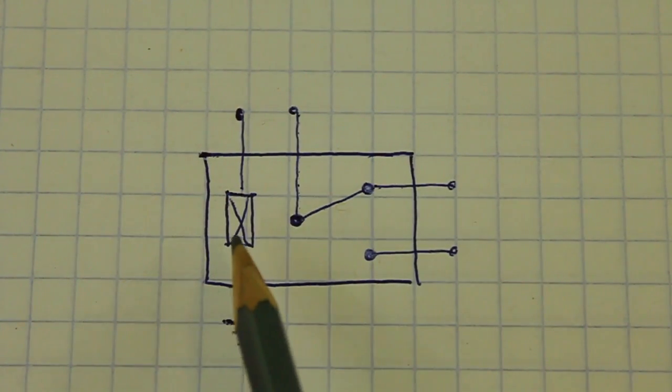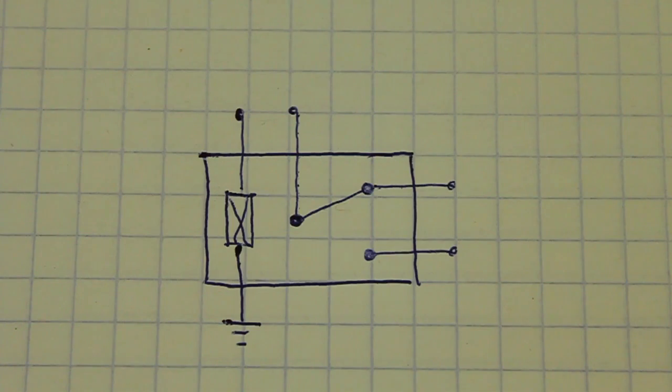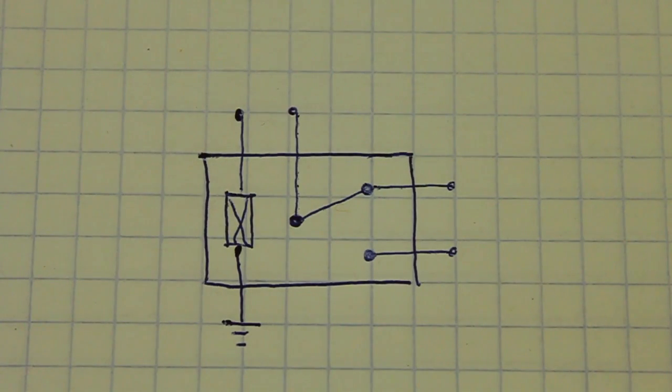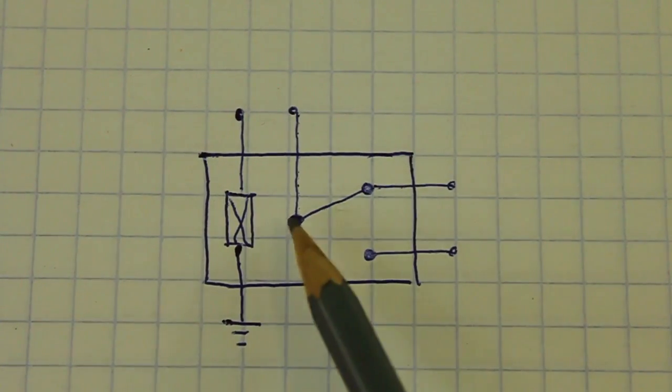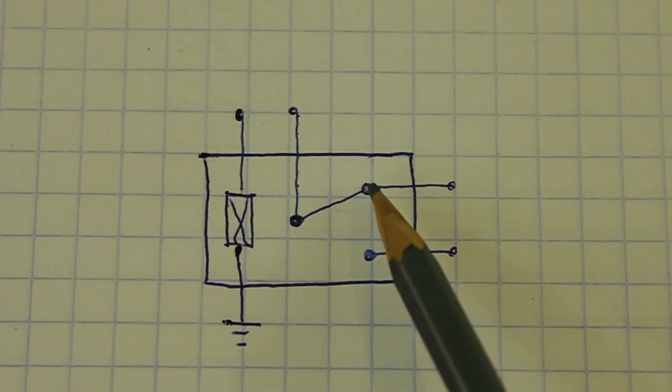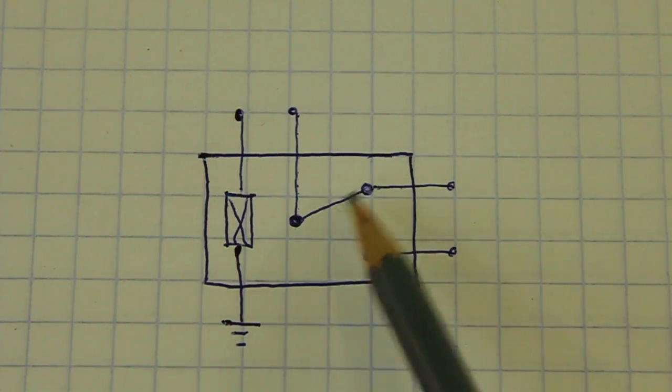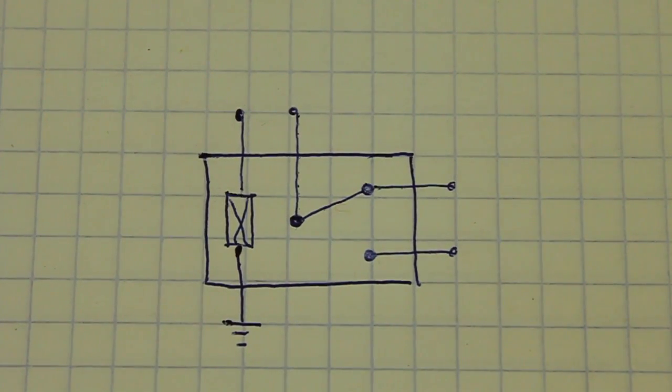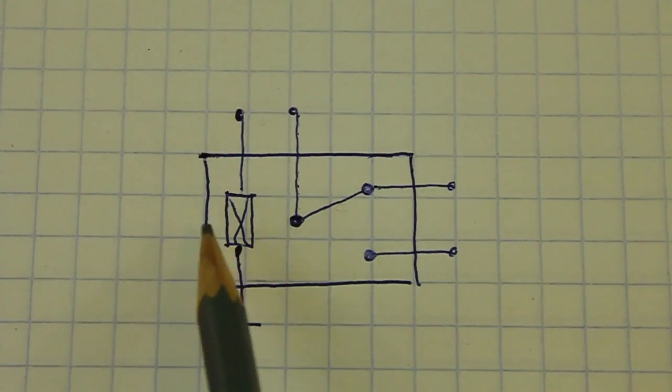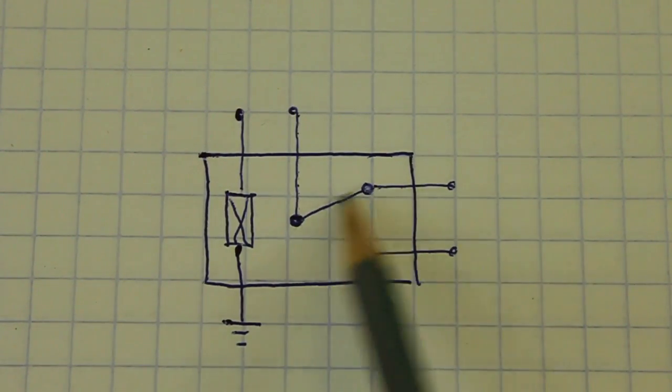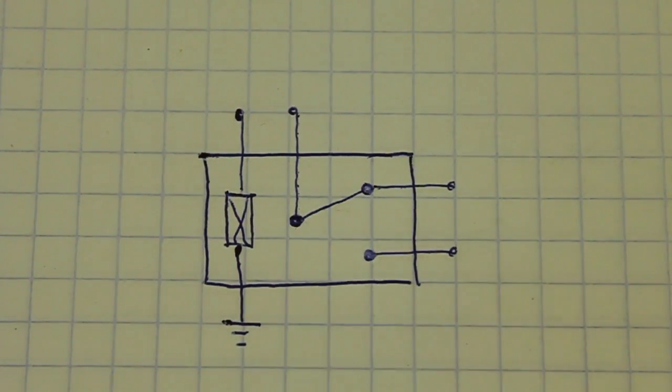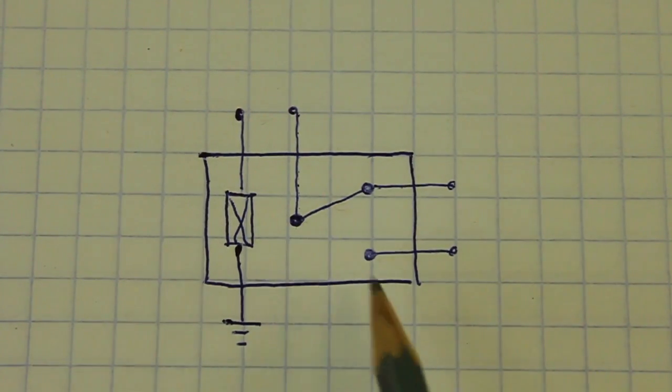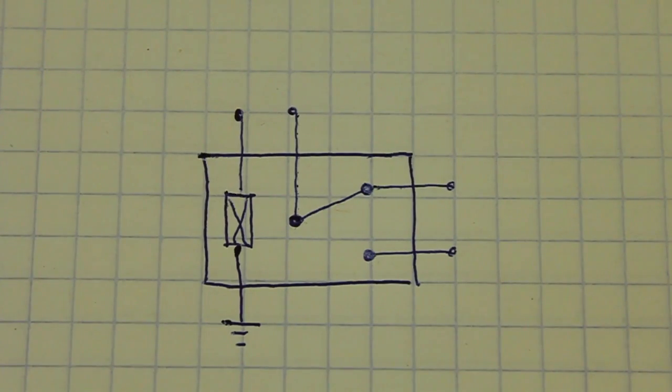One terminal of the coil goes to negative or ground and the other is free for connection. When the coil is not energized, we have the common and the normally closed contact, we have a connection between them. But when we energize the coil, this switch moves to the other position and now we have connection between the common and the other contacts.